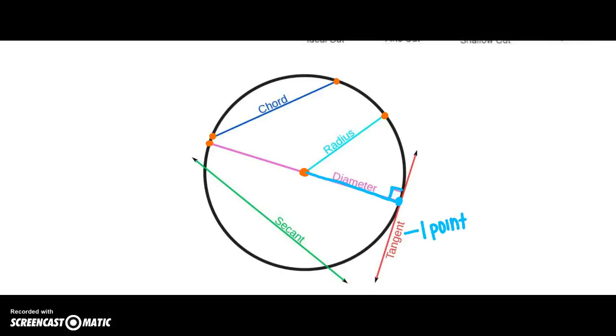My tangent is always going to be perpendicular to a radius or a diameter. And it only hits the circle at one point. And my secant hits the circle at two points. But it has things that go outside the circle. So that completes section 3 or 6 for us now. Hope you enjoyed and hope to see you back for section 7. See you in the next section!